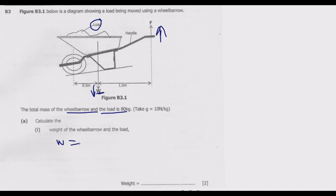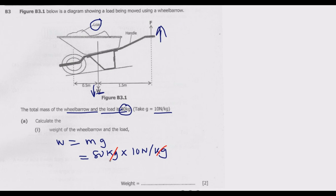Weight is given by mass in kg multiplied by gravity. In this case, mass is 80 kg and gravity is 10 newtons per kg. The kg units cancel, so 80 times 10 gives us 800 newtons. That is the weight of the wheelbarrow and the load.